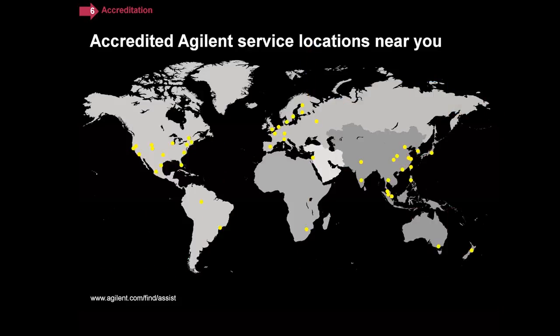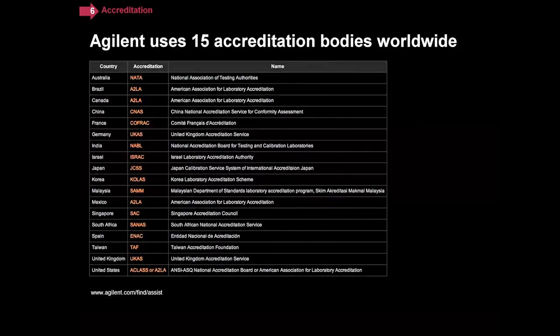We feel that a scope of accreditation is really important, and that's why all of our service locations are accredited. Around the world, we use 15 different accreditation bodies. It's very easy to go on the Agilent website and check exactly what the scope of accreditation is for any of our labs. We're very proud of that, and we think that whenever you're comparing two laboratories, you should check what parameters they're accredited for.